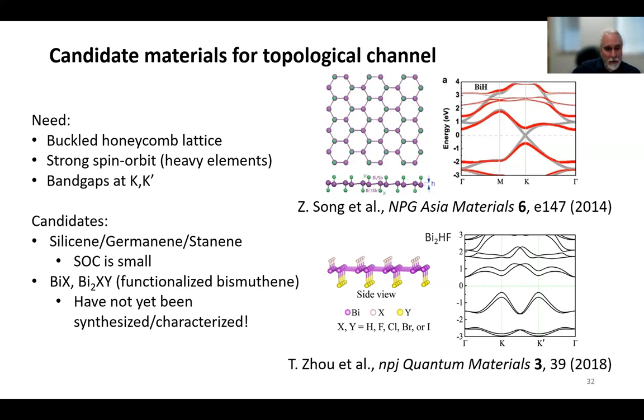Functionalized bismuthene looks very good. It has very strong spin-orbit coupling and can achieve these really big gains. But this material has not been synthesized and characterized yet, but this, I think, points in the direction that we should look. So this is a remaining challenge that we need to figure out the best materials to realize this kind of device and make those materials.